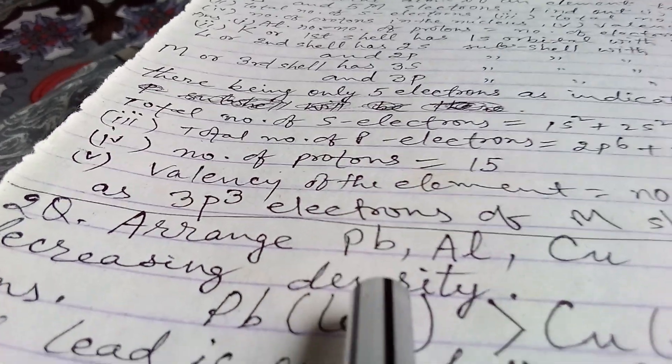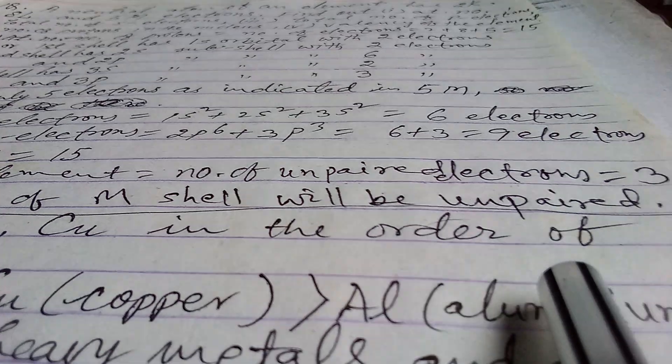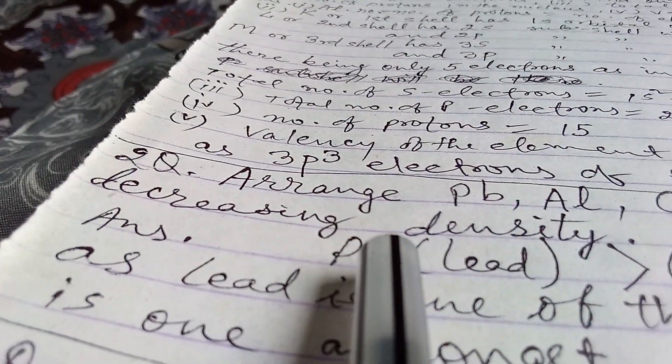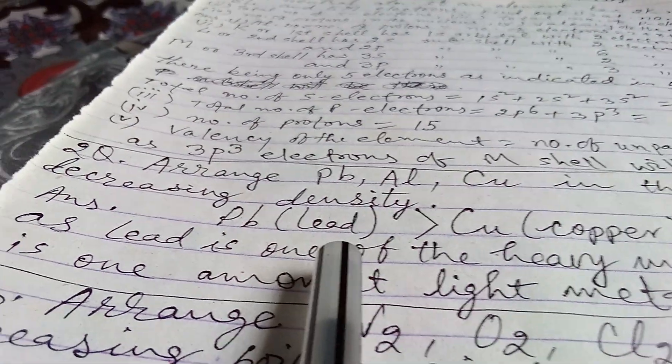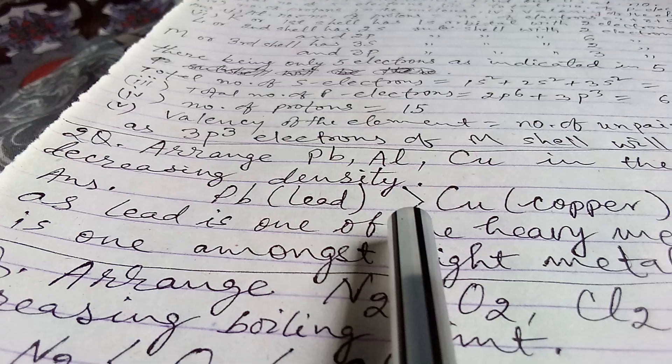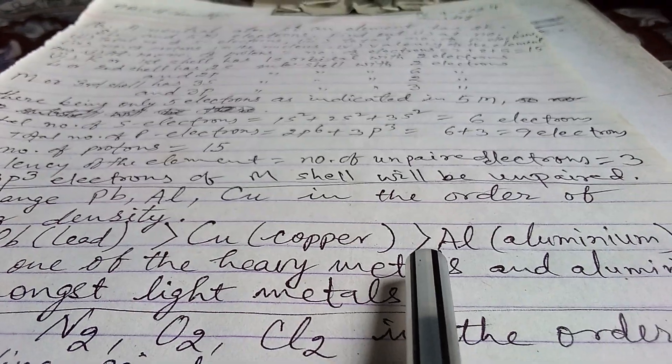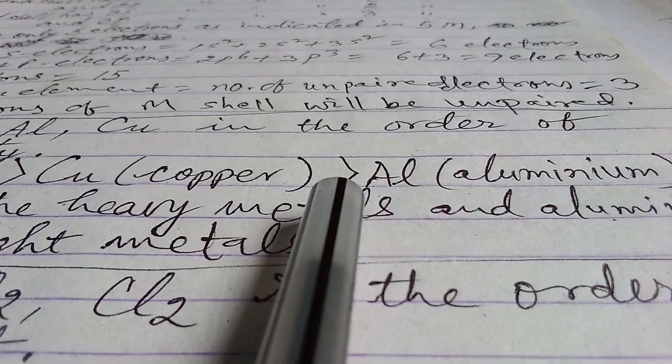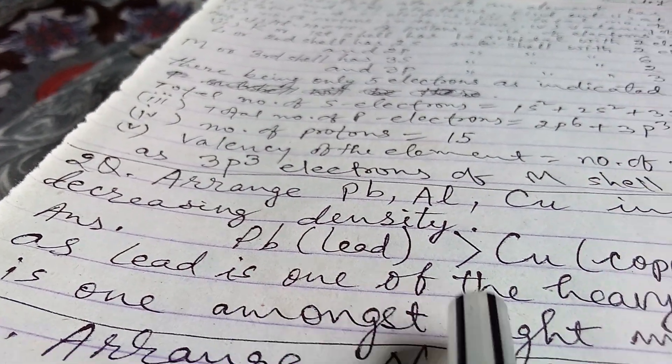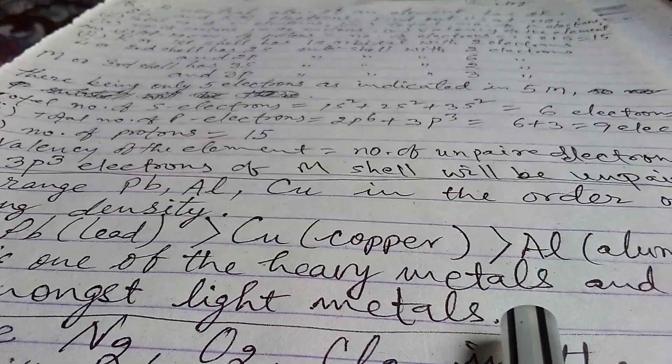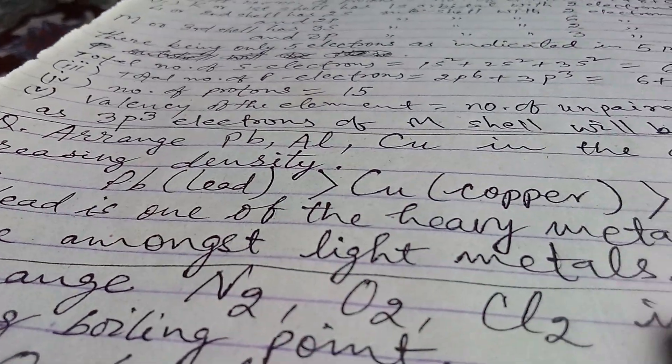Second question is: arrange lead, aluminum, copper in the order of decreasing density. So answer is, lead has greater density, copper has less than lead, and aluminum has less than copper. So we find that lead is one of the heavy metals and aluminum is one amongst light metals.